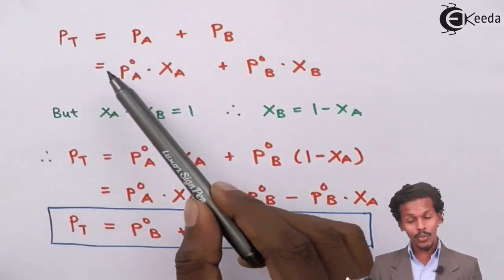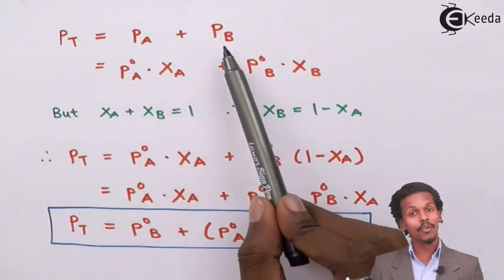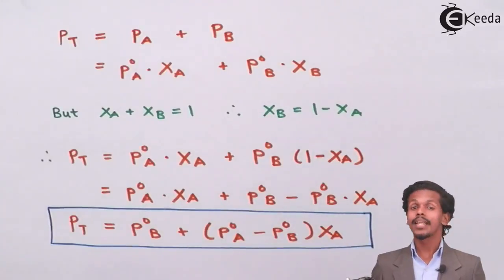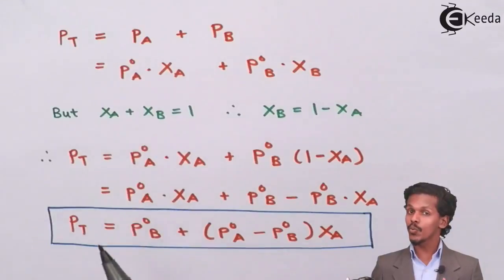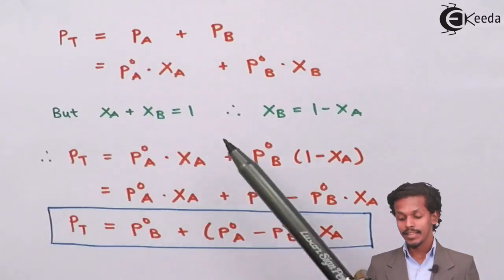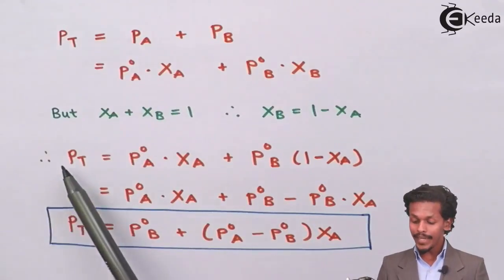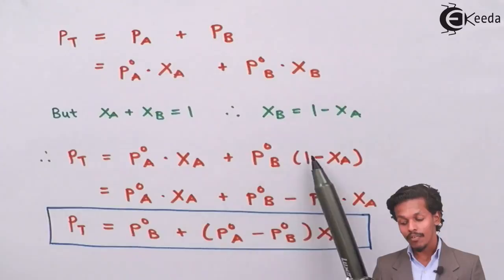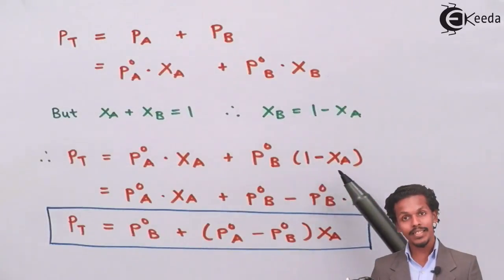Therefore, P naught of A into X A and P naught of B into X B. But since X A plus X B equals 1, X B is nothing but 1 minus X A. So P T equals P naught of A X A plus P naught of B (1 minus X A). Instead of X B we have substituted 1 minus X A.